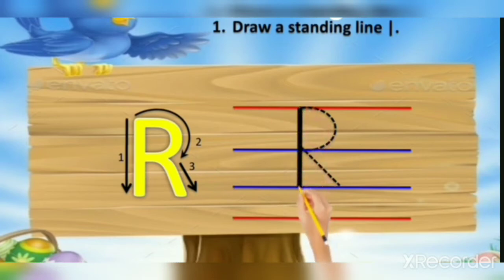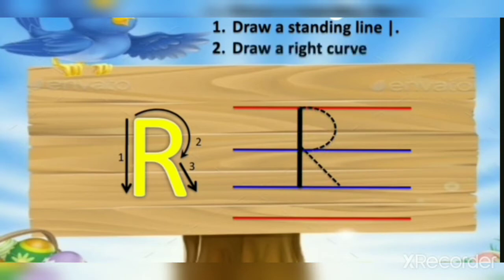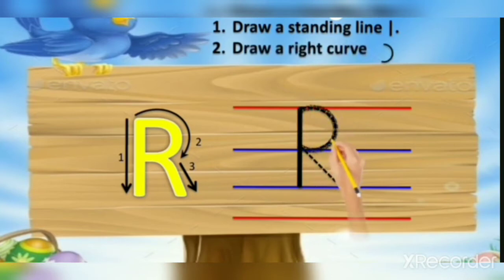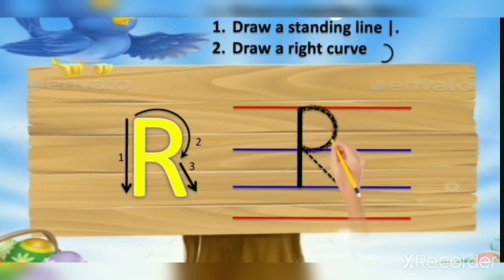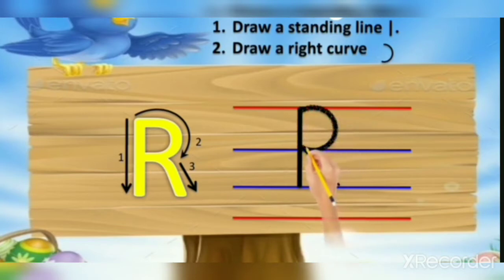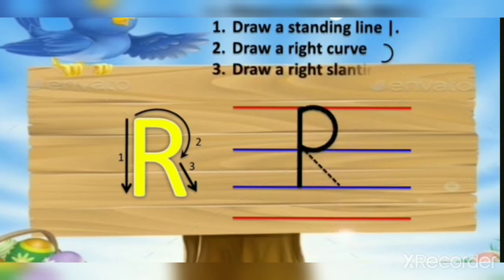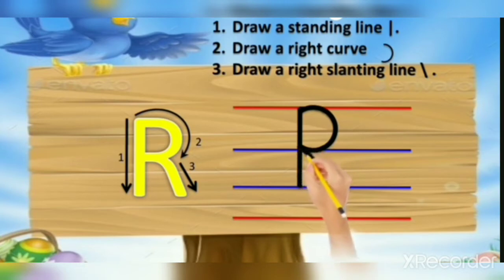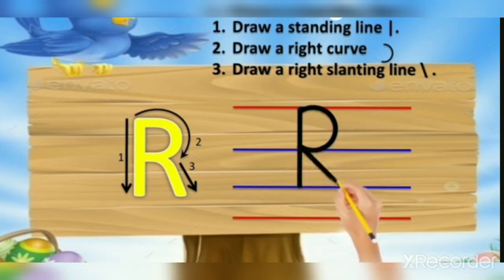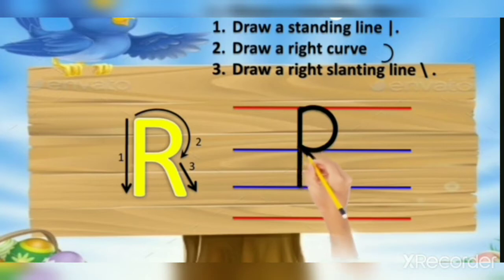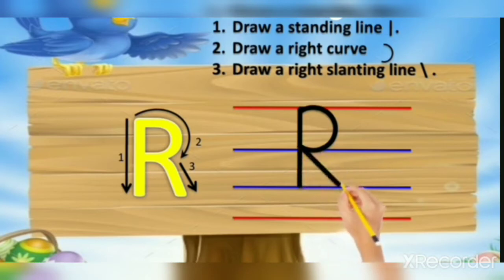The second step is to draw a right curve. The third step is to draw a right slanting line from the blue line to the blue line, only in between the blue lines.